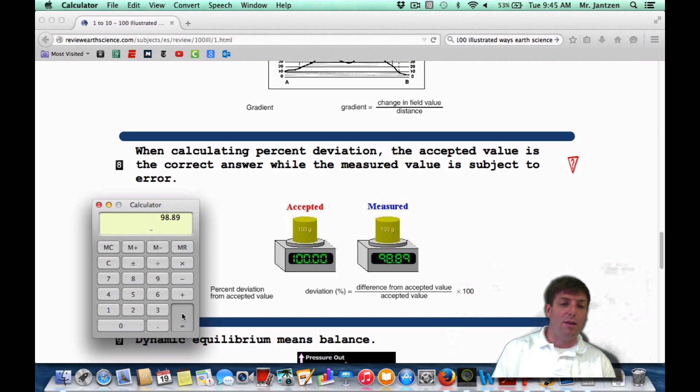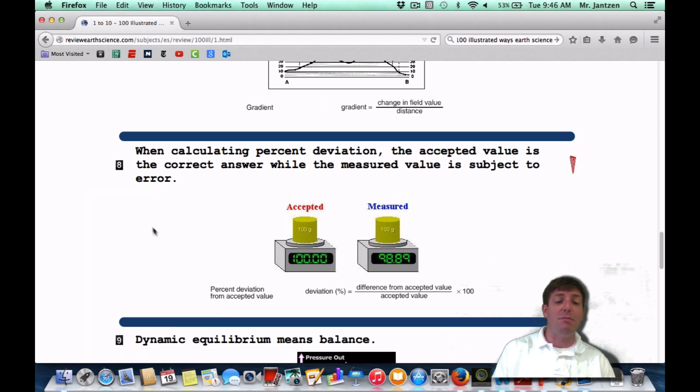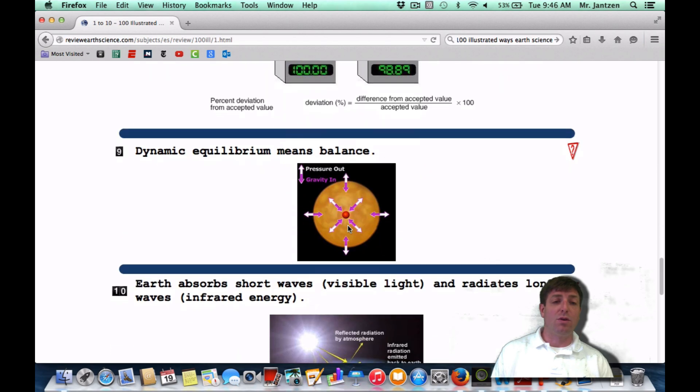And that's going to be 1.11. Then you're going to divide that by your accepted value. So your accepted value is 100, so you're going to hit divide by 100. And then you're going to get that, but the last step is multiply everything by 100. So you're actually going to get the same answer, but you want to follow all the steps in the formula, and it's going to be 1.11%. That's your percent deviation. That means this measured value was 1.11% away from the actual accepted value.